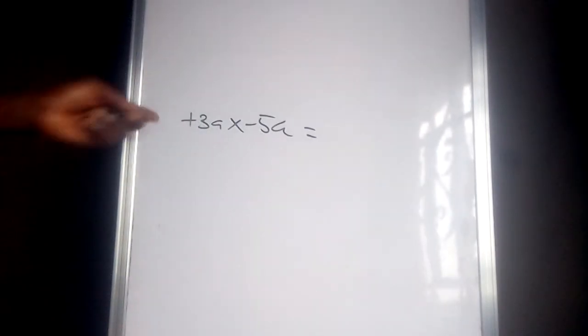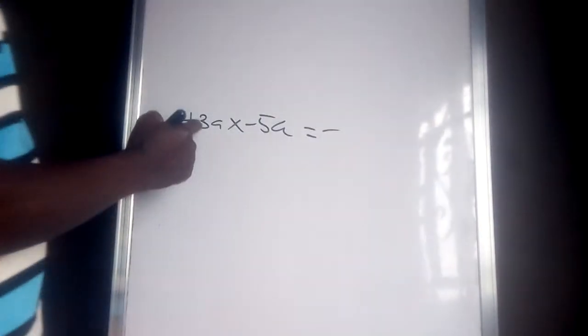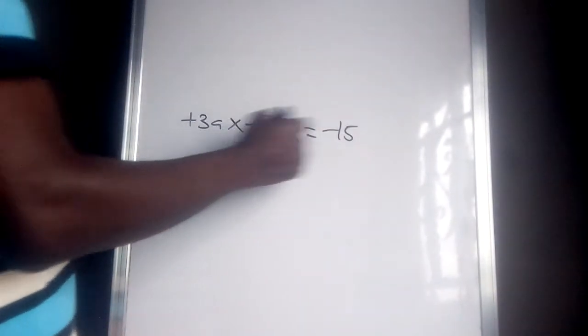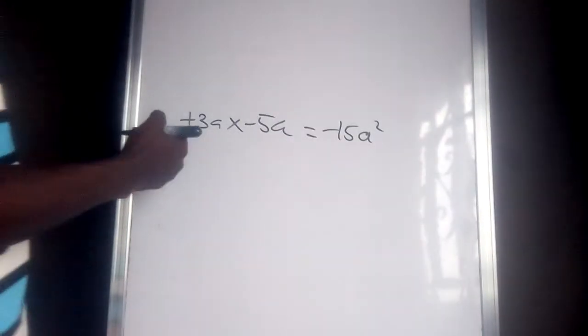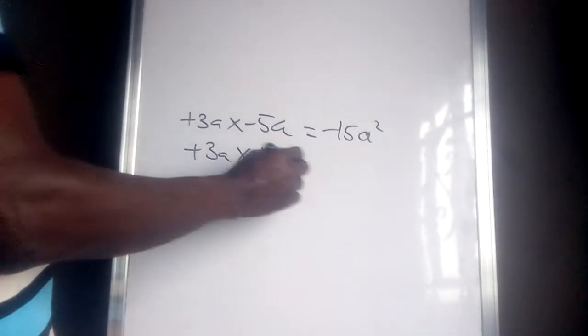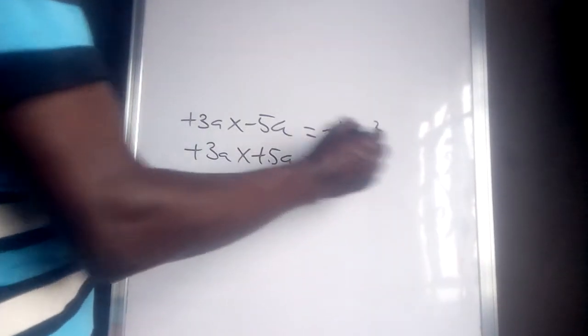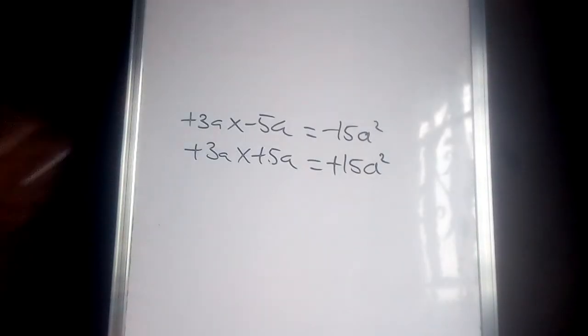For example three: minus 3a times plus 5a. You can transpose — bring minus 5a to the front and plus 3a to the rear. Plus times minus is minus, 3 times 5 is 15, a times a is a squared, giving minus 15a squared. And equally, plus 3a times plus 5a: plus times plus is plus, 3 times 5 is 15, so the answer is positive 15a squared.